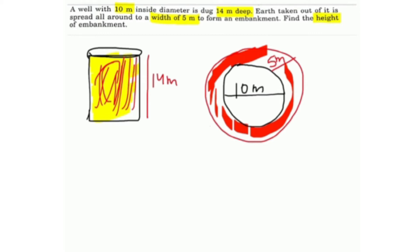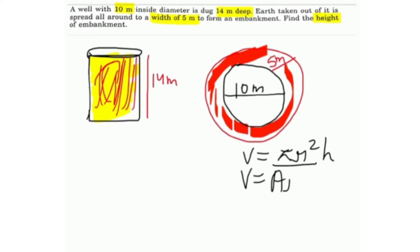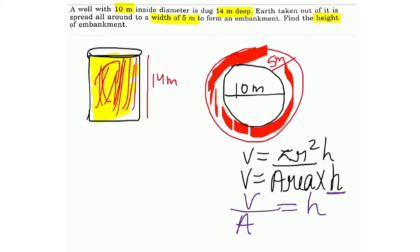First, remember that volume is equal to π r² h. Here, π r² is basically the area. So we can replace π r² with area, giving us volume equals area times height. Therefore, height equals volume divided by area. We will use this to find the height of the embankment.